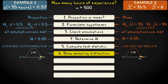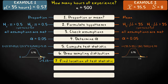Step 7: Assess if your test statistic is located in the rejection region or not. In our first example, this is the case: our test statistic of 3.13 is further removed from the mean of the sampling distribution than the critical value of 1.64. But in the second example, this is not the case: our test statistic of 1.40 lies closer to the mean than our critical value of 1.66.